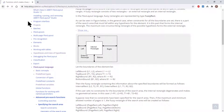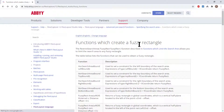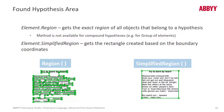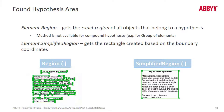We can also see the functions which create a fuzzy rectangle. A fuzzy rectangle consists of two rectangles — an external rectangle and an internal rectangle, as pictured. If a hypothesis is formulated for a paragraph element, the region of the hypothesis will be built on the basis of the array of rectangles of the detected objects. So you can see that here we really have just a combination of a bunch of rectangles.